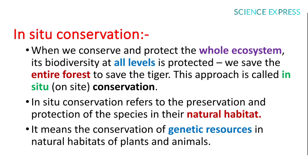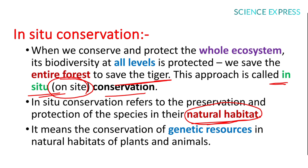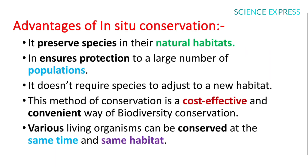In in-situ conservation, we conserve and protect the whole ecosystem so biodiversity at all levels is protected. We save the entire forest to save the tiger — this approach is called in-situ or on-site conservation. In-situ conservation refers to the preservation and protection of species in their natural habitat, meaning conservation of genetic resources in the natural habitat of plants and animals.